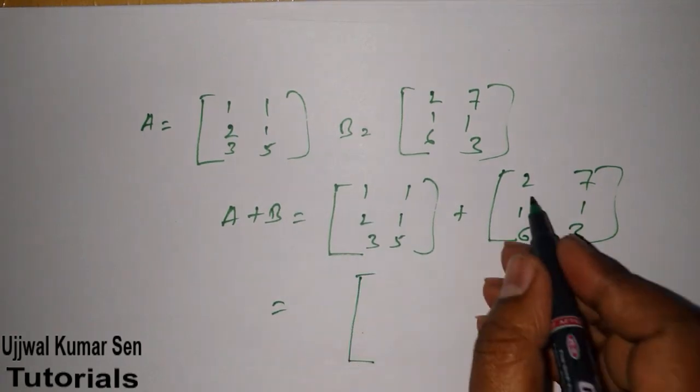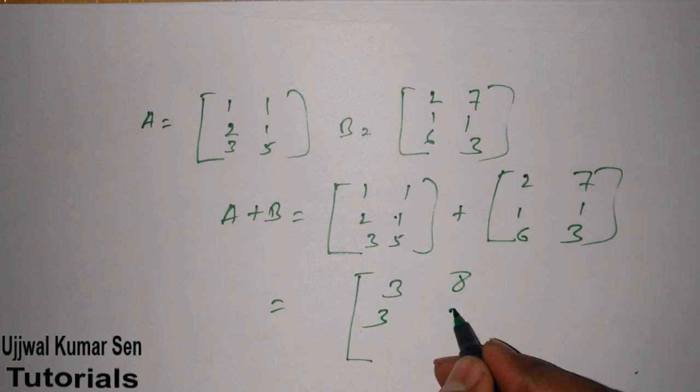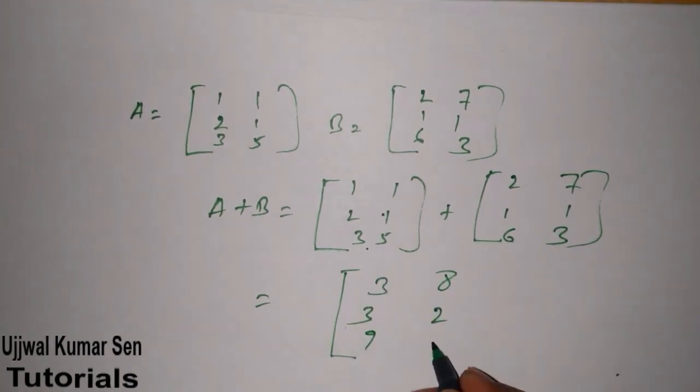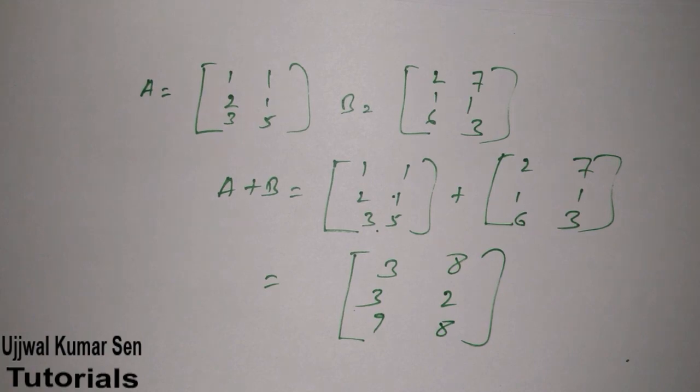Is equal to how much value. 2, 1, 3, 8, 3, 2, 2, 9, and 8. So this is example of addition of matrices. I hope you understand about it. Thanks for watching. See you soon in my next video. Bye bye.